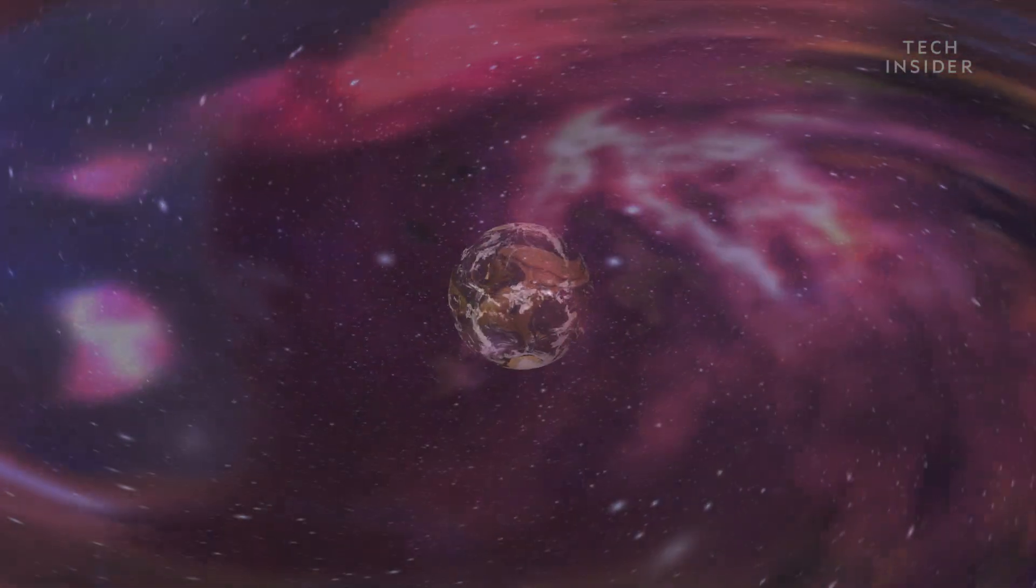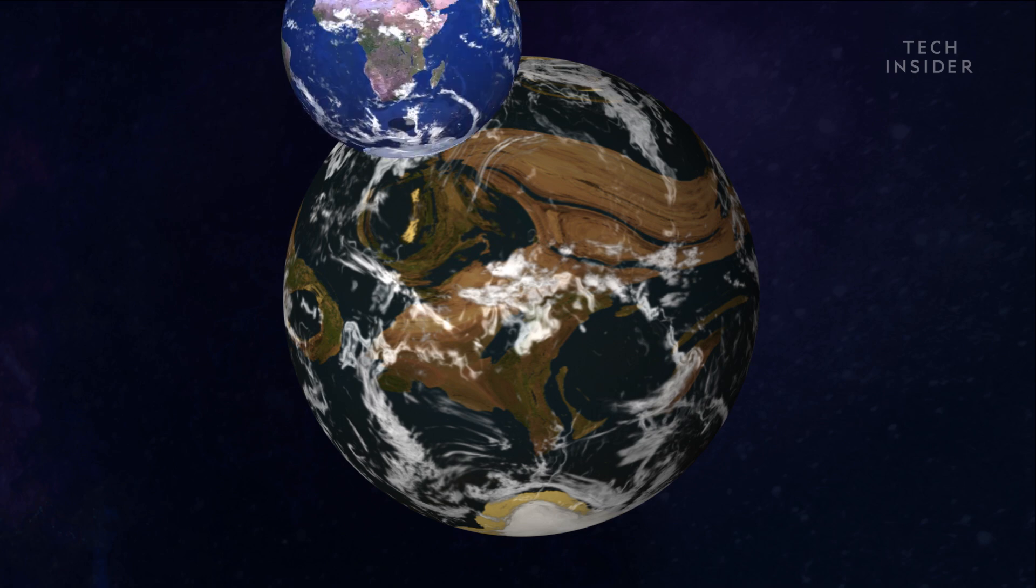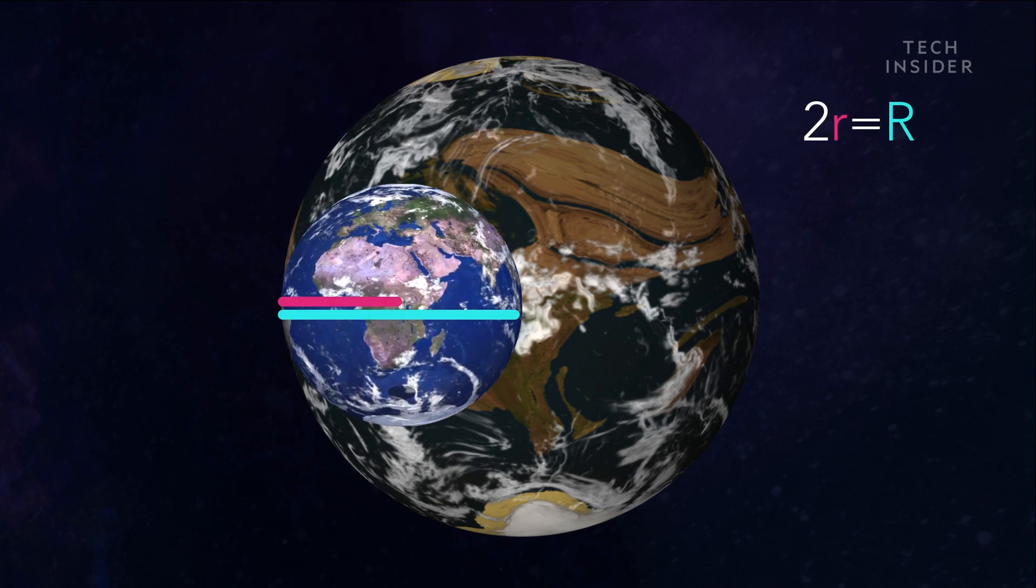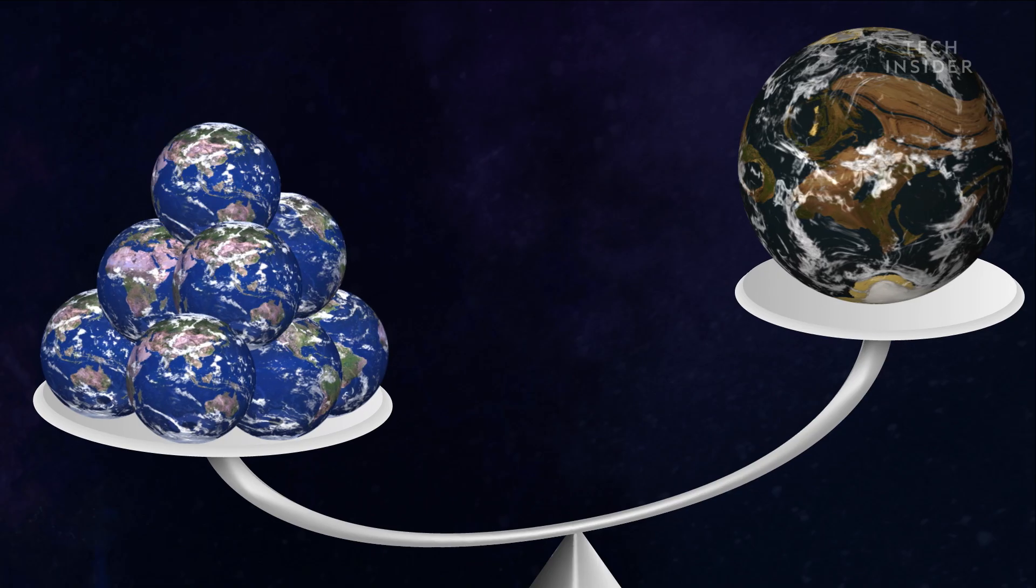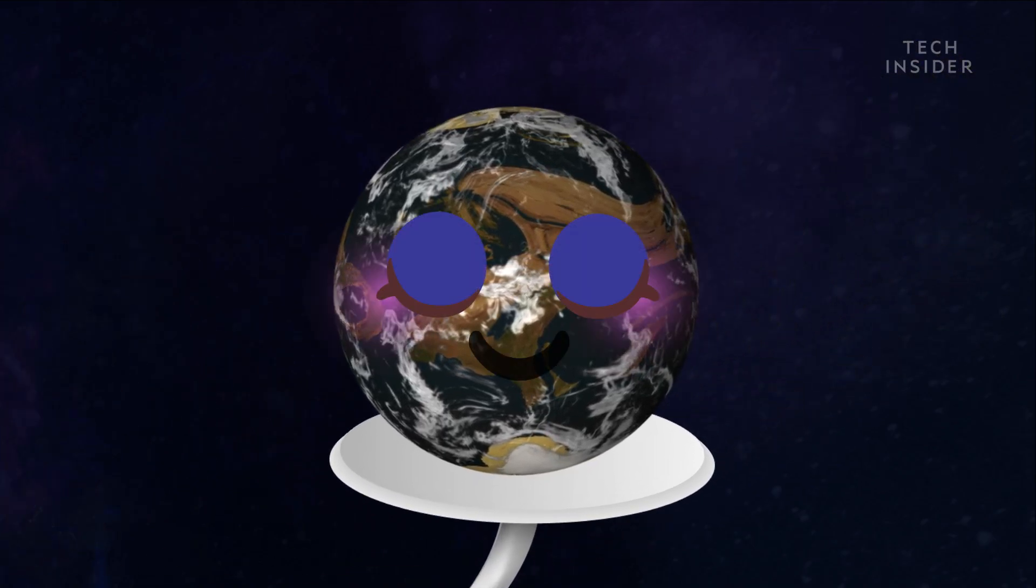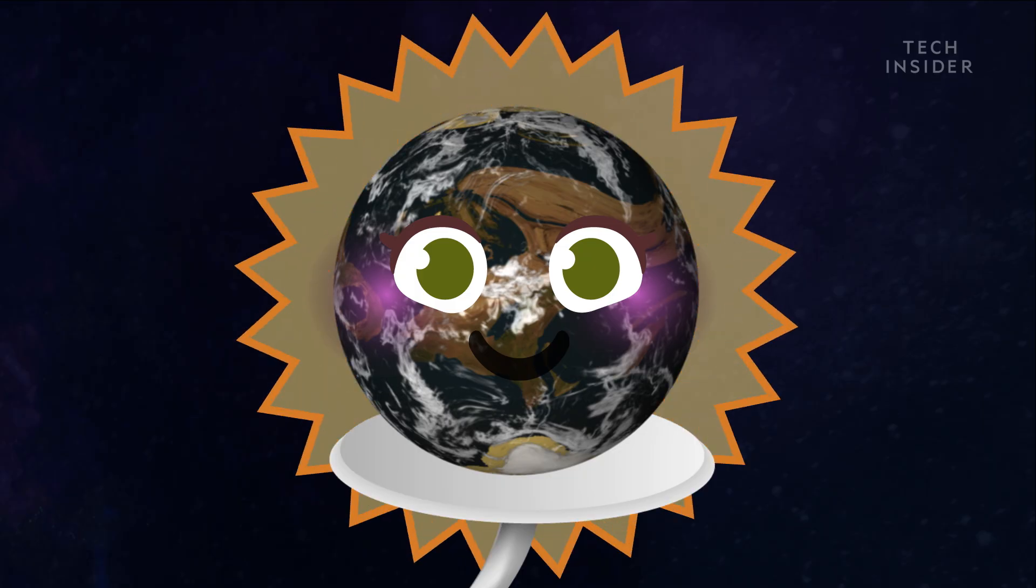Liquid water is just the start. These planets can be almost double Earth's radius and up to ten times more massive. And all that extra mass is what researchers think could really make super-Earths the perfect home.